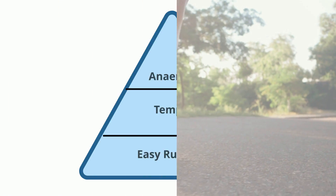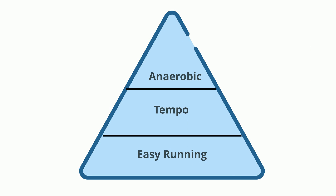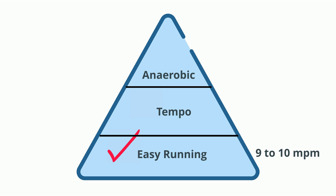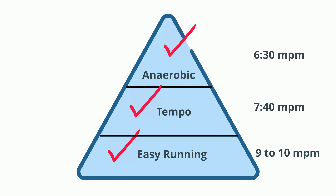If you take a look at this pyramid, you will see the three levels of intensity. The base, which makes up the bulk of your training, is aerobic — it is easy running. If you average 7 minutes per mile in a 5k race, your easy pace is roughly 9 to 10 minutes per mile. Tempo pace, found in the middle, would be roughly 7:40 for the 14-minute 5k person. And at the top of the pyramid is anaerobic pace, which would be 6:30 pace or faster for the 14-minute 5k person.